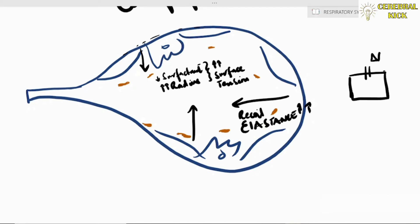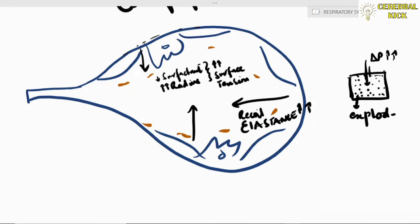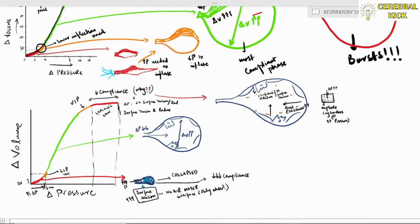If you inflate something beyond a certain pressure, it would explode — the same occurs with the alveolus. At pressures greater than 30 centimeters of water, there is a strong chance the alveolus will no longer expand and will burst. This is known as barotrauma.